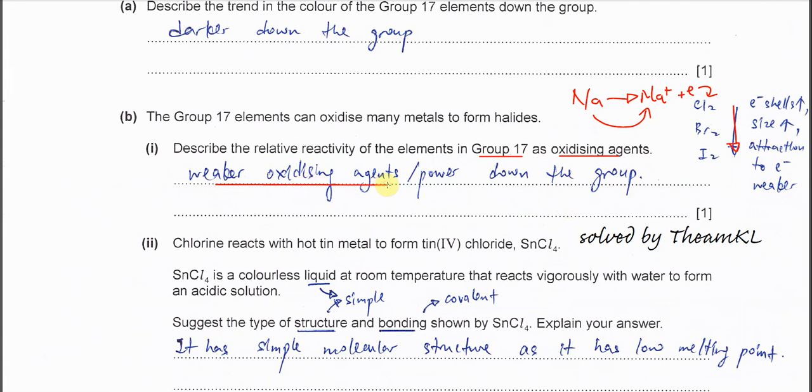The ability for these Group 17 elements to gain electrons is weaker. Because more electron shells, more shielding. When down the group it's going to be a weaker oxidizing agent because attractions to electrons weaker means ability to gain electrons is weaker.